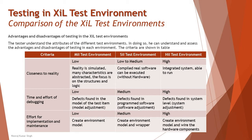The criteria are shown here in a table. I hope you remember that in the previous two or three tutorials, we understood the details of Mill, Zill, and Hill — what these test environments are for and what their capabilities are — which will help determine certain activities. Now we are going to relate them to various criteria. Here is a list of criteria and their impact on the Mill, Zill, and Hill environments.